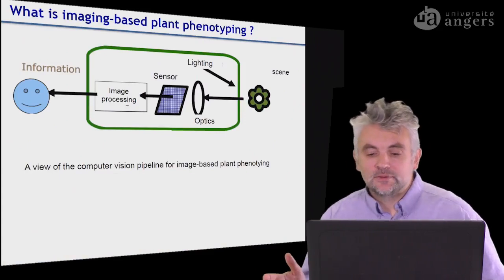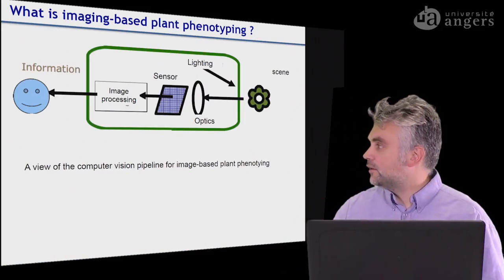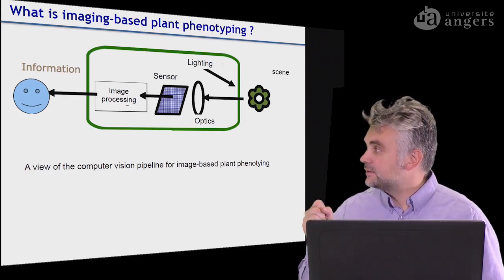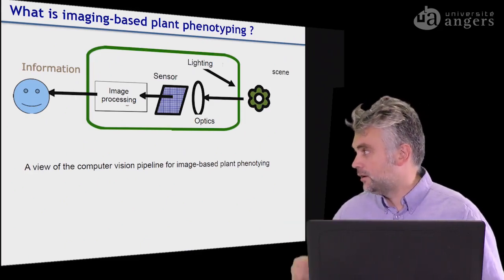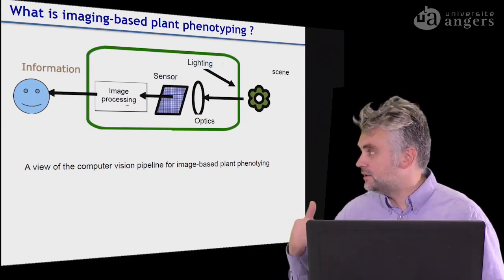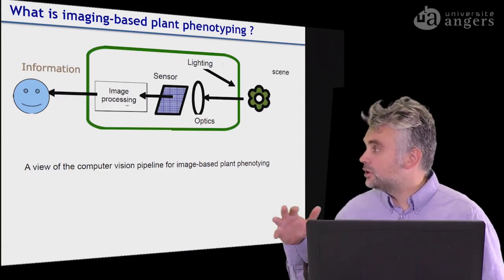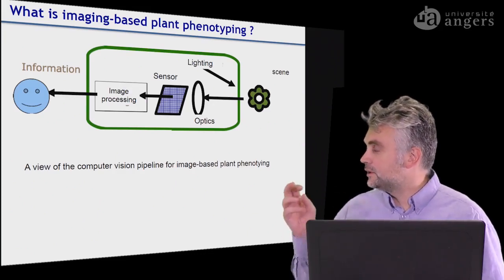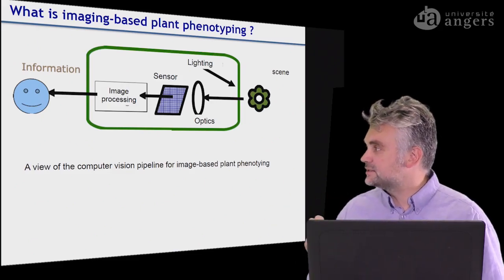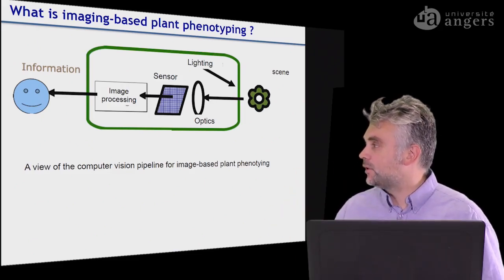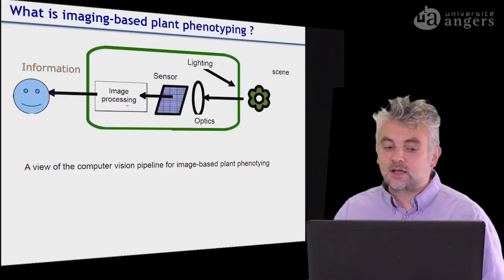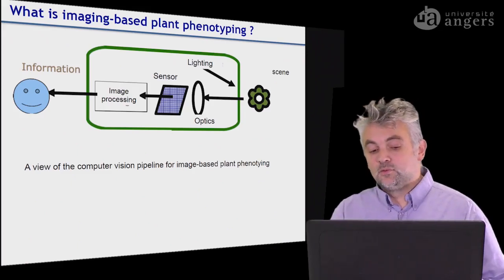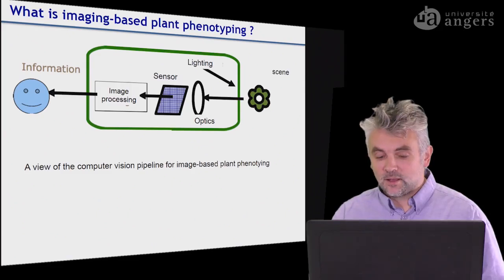So what is image-based plant phenotyping? It incorporates all the elements described in these schemes, meaning some light that will go on the scene — the scene being made of plants inside a controlled environment. Then the reflection and interaction of this light with the scene will produce waves captured by an optic, sent onto sensors. Some image processing will be made from the information acquired by the sensor, and then the extraction of information in these images will be made. This is the computer vision pipeline for image-based plant phenotyping.